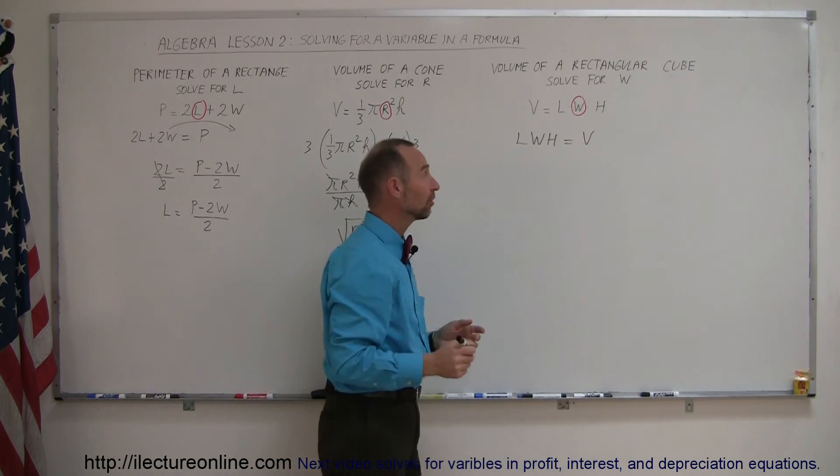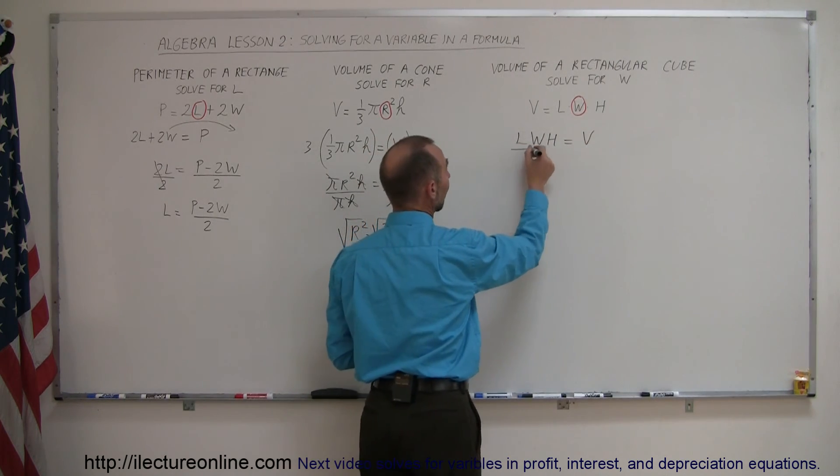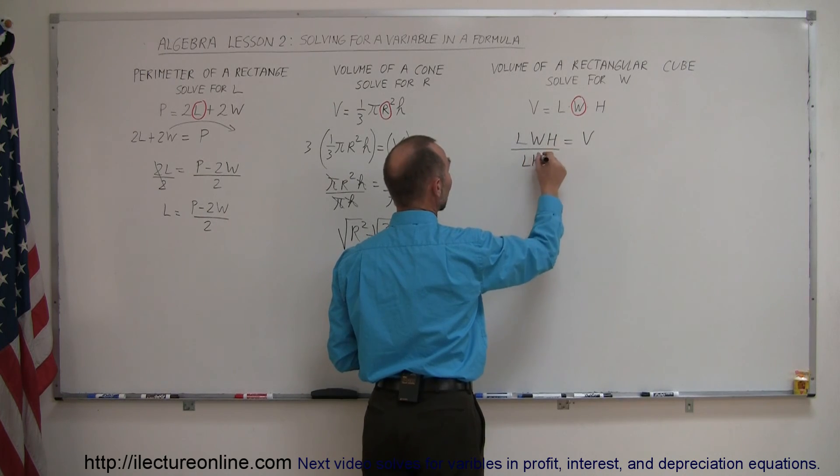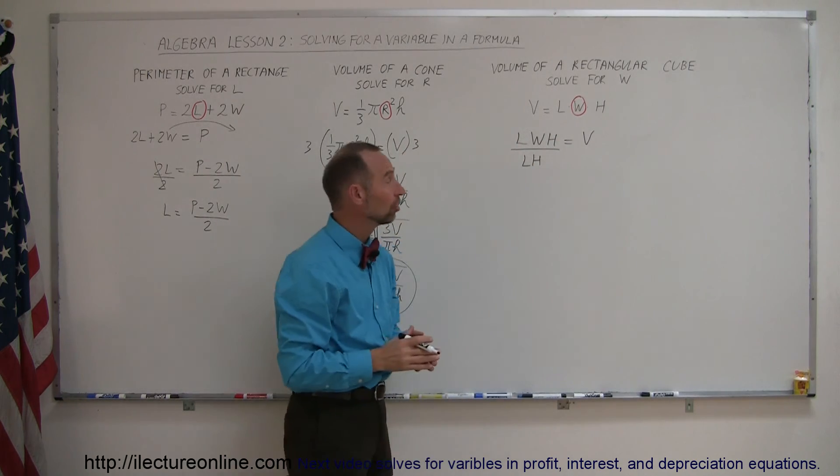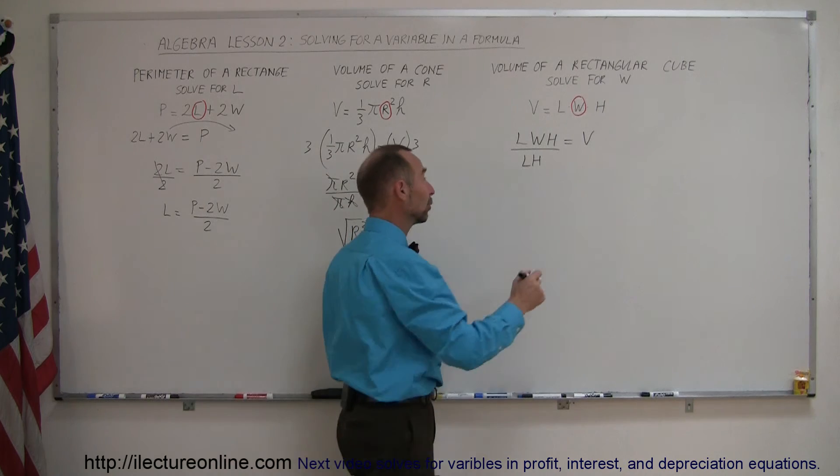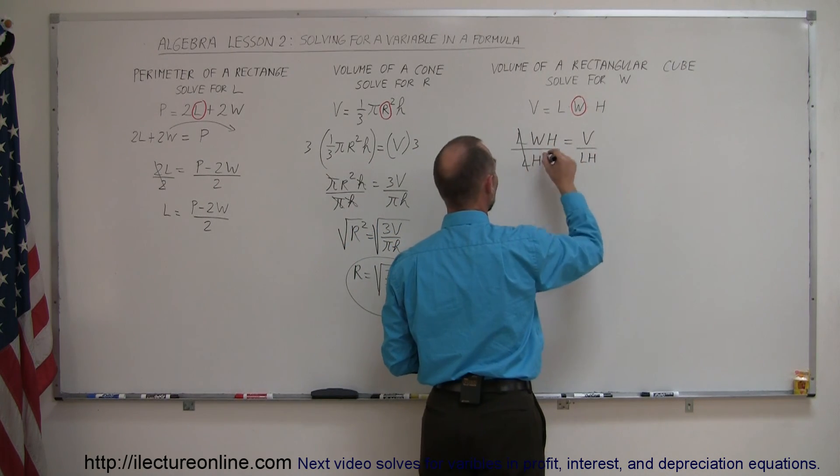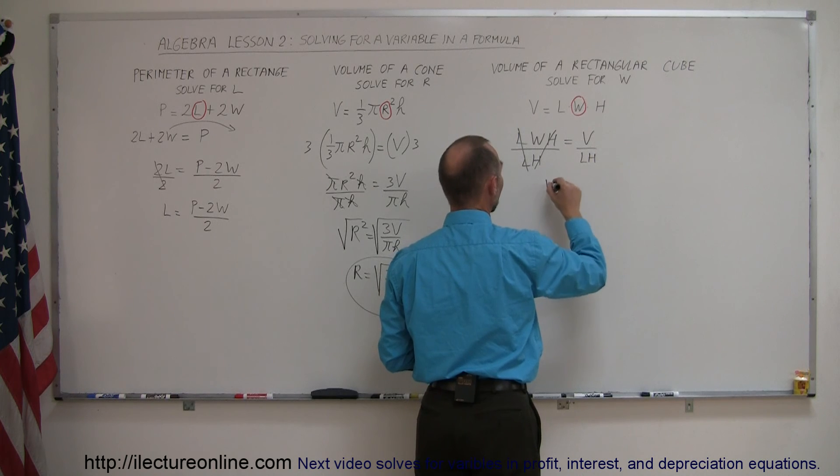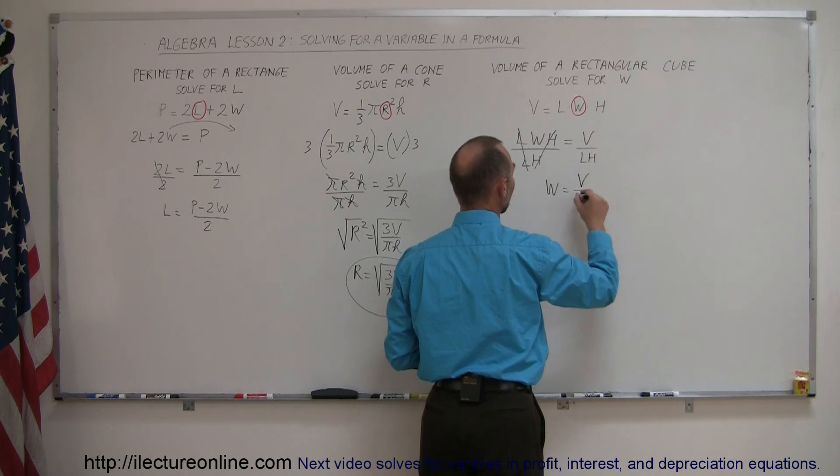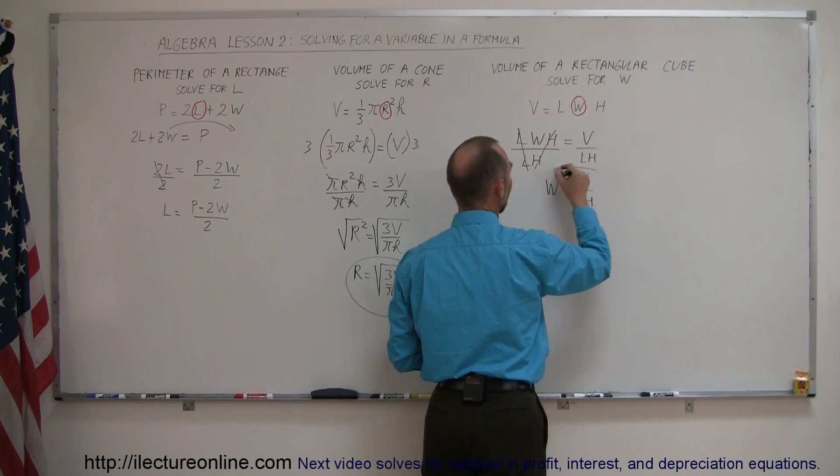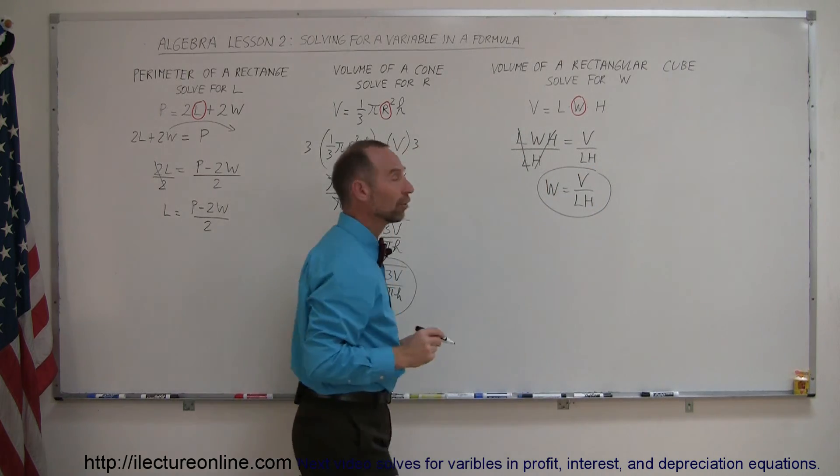And the next step, since we're looking for W, we're going to divide the left side by the coefficient of W, which is L and H. Of course, when we do the left side, we have to do it to the right side, so this is also divided by L times H. The L's cancel out, the H's cancel out, we have W equals volume divided by the length times the height.